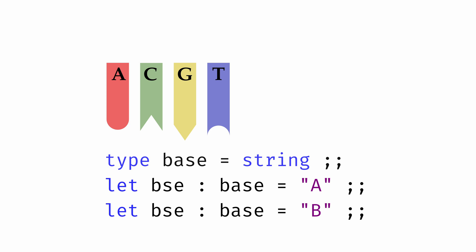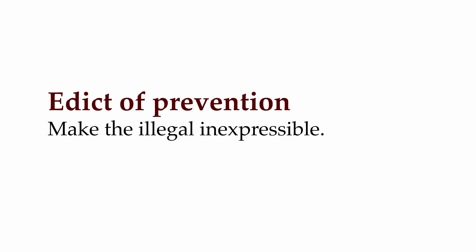If our code is only designed to handle the four strings A, C, G, and T, we need to be very careful not to ever let a DNA base take on any other value and get into some illegal state. It would be much better if this kind of illegal state just wasn't possible at all. This is what we call the Edict of Prevention: make the illegal inexpressible. To follow the Edict of Prevention, we need to find some alternative structure for representing DNA bases — one that doesn't even allow the possibility of an invalid base.